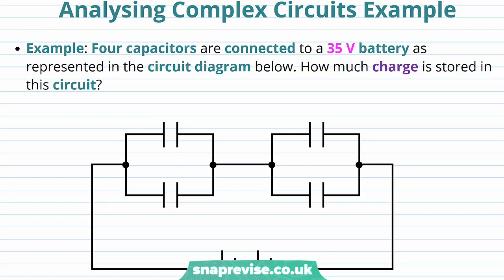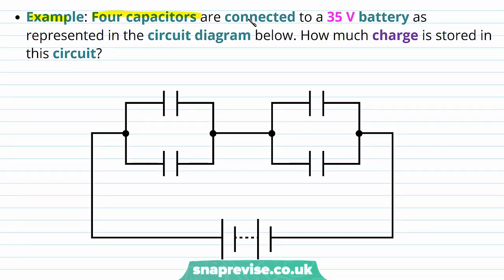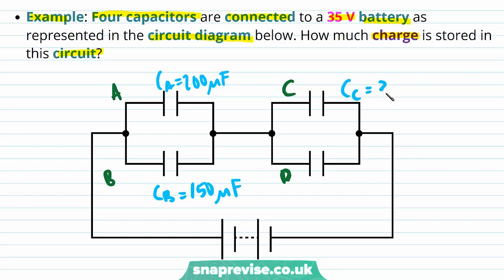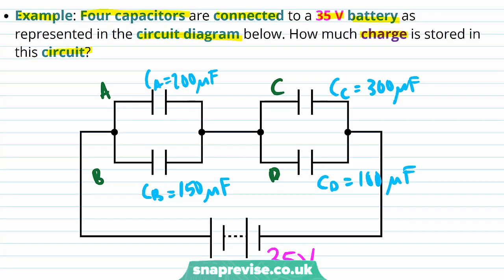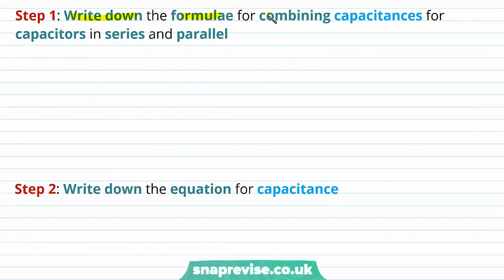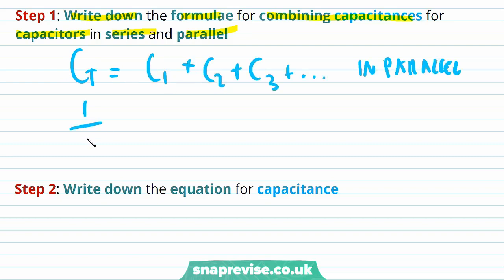We're now going to do an example of analysing complex circuits. Four capacitors are connected to a 35 volt battery. How much charge is stored in this circuit? We have four capacitors A, B, C, and D, with capacitances 200 µF, 150 µF, 300 µF, and 100 µF respectively, all connected to the 35 V battery. Step 1: write down the formulas for combining capacitances in parallel (sum of individual capacitances) and in series (sum of reciprocals). Step 2: write down the equation for capacitance: C = Q/V.